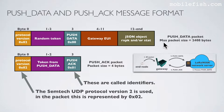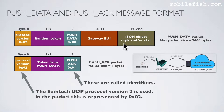This is the push data packet message format. The maximum packet size is 2408 bytes. Byte 0 contains protocol version 2. Byte 1 and 2 contain a random token. Byte 3 contains an identifier — value 0 means push data. Byte 4 to 11 contains the gateway EUI, and starting from byte 12 it contains the received packet JSON object and/or status object.